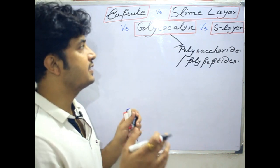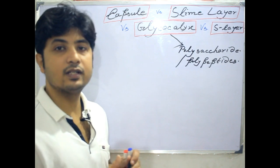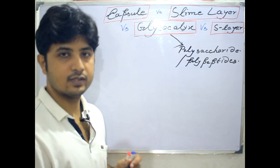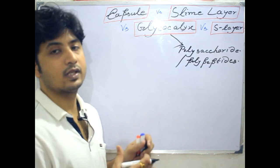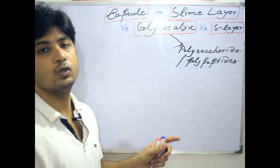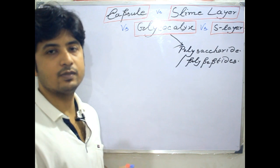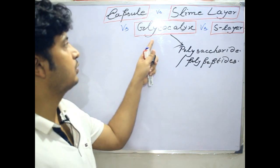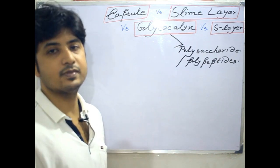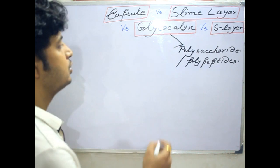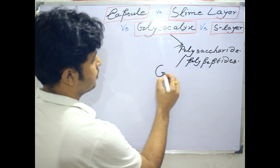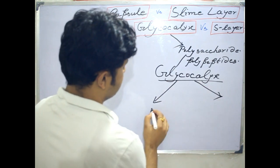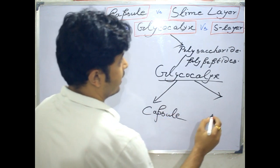Glycocalyx when present in a tightly bound form with polysaccharide and cannot be removed or cannot be easily detached from the bacterial wall is called a capsule. When glycocalyx is loosely attached to the prokaryote — whether gram positive, gram negative, or archaea bacteria — it is called a slime layer, which can be easily removed. The glycocalyx, mainly composed of polysaccharides and sometimes polypeptides, can be divided into these two substances: capsule and slime layer.